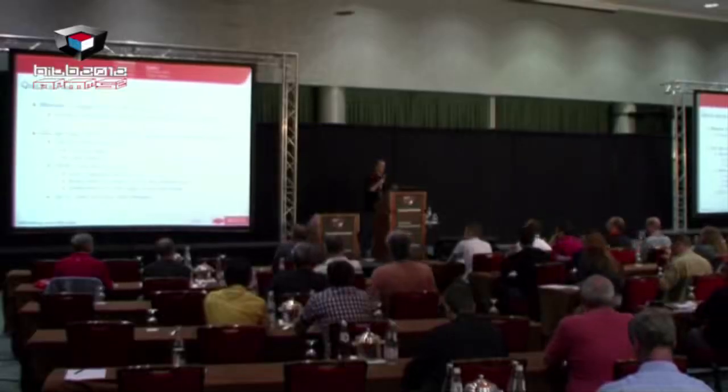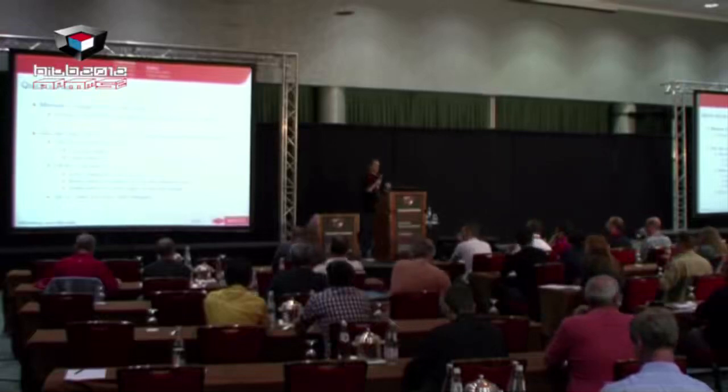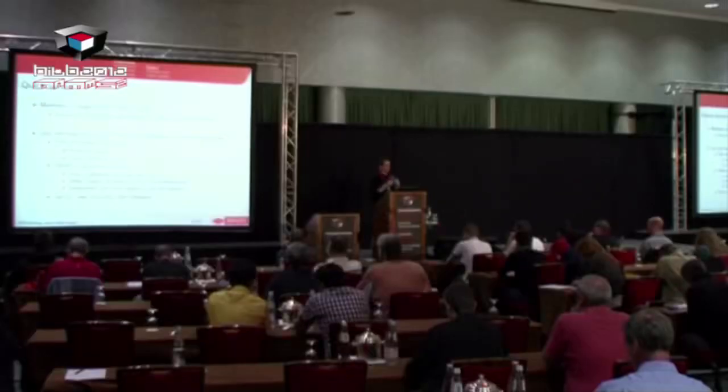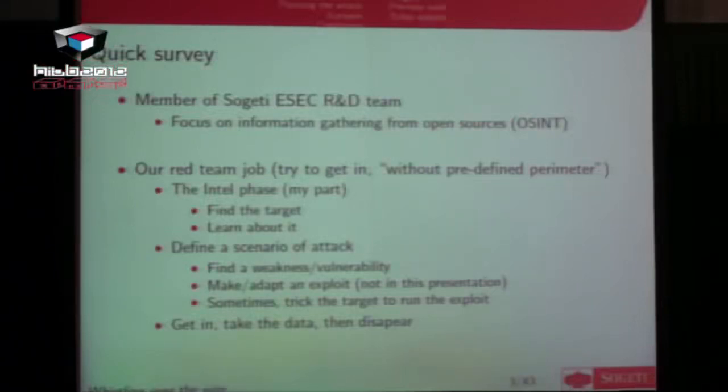My job is mostly to work on how to gather information from open sources and often on social networks. Part of the job of our team is to make a red team mission. When we do that, we have no defined perimeter, and service companies ask us to try to get in with nearly any method. The first step is to gather as many information as possible about our target. We define the target as the person with access to the sensitive data we want to steal.